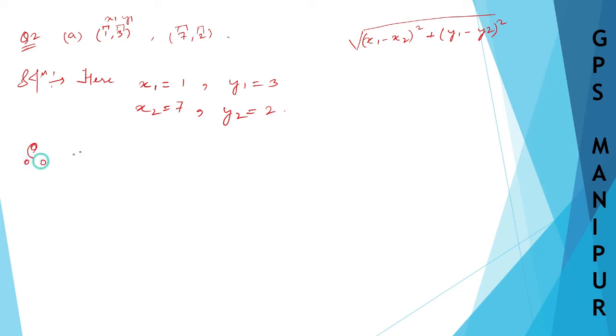Therefore, distance of (1,3) from (7,2) is - this is our formula - root over: x1 minus x2, x1 is 1, 1 minus x2 is 7, 1 minus 7 bracket and square, plus y1, y1 is 3.